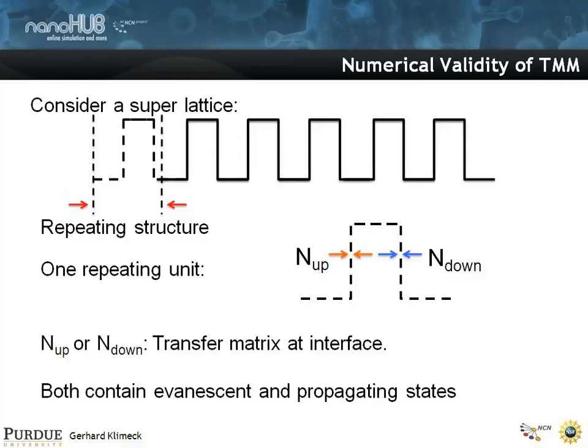So one repeating unit has an interface where the electron sees an up interface, and then there's an N_down, a down interface. So each of these units is made up of a transfer matrix at each interface. Pretty straightforward.